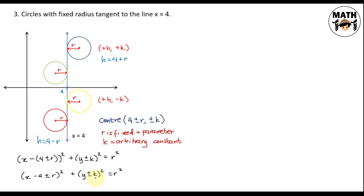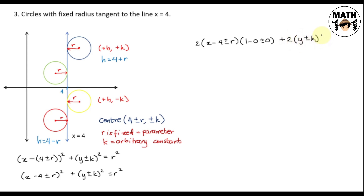Since k is the only arbitrary constant, we differentiate once. Using the chain rule: the derivative of the first term is 2(x minus 4 ± r)(1 minus 0) — since the derivative of r (a constant) is 0. Plus 2(y ± k)(y prime ± 0) — derivative of k is 0. The derivative of r squared (a constant) is also 0. Simplifying: 2(x minus 4 ± r)(1) plus 2(y ± k)(y prime) equals 0. Dividing the whole equation by 2.